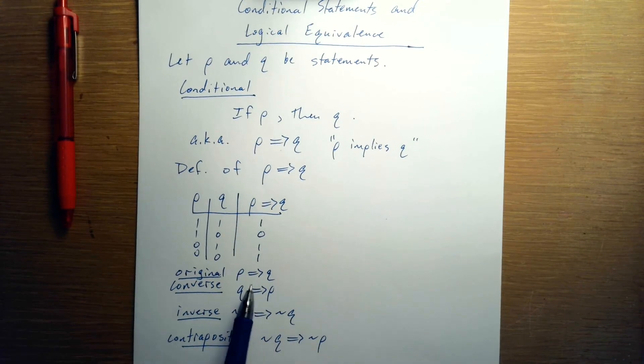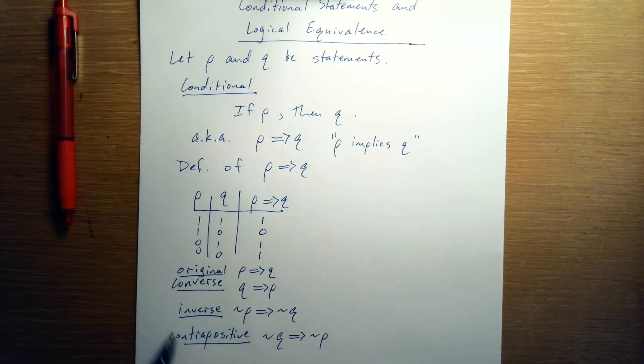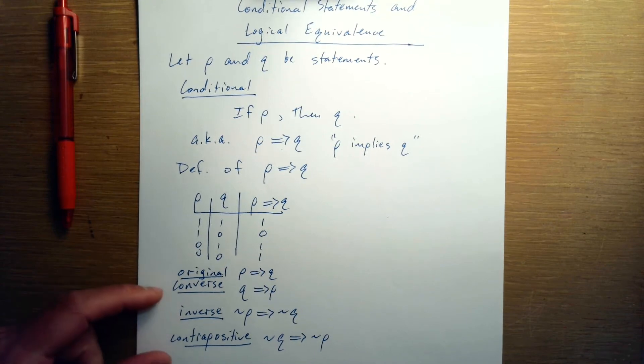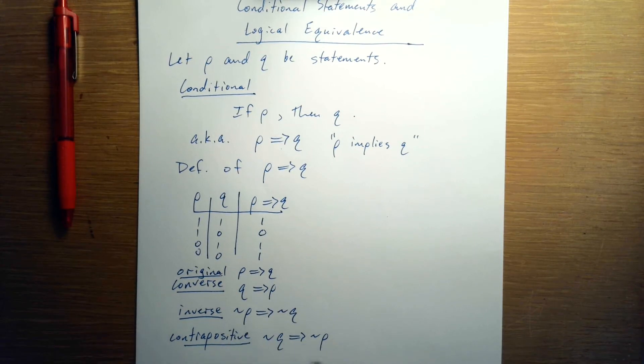Again, these are all derived from this original statement, P implies Q. And we just give them names because they're rather common. The inverse is not as common, but converse and contrapositive, those are used all the time. Converse is obtained from the original by switching the order. Inverse and contrapositive involve either switching the order and negating both terms or simply negating both terms.